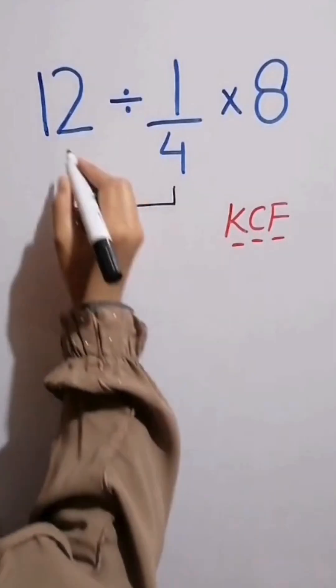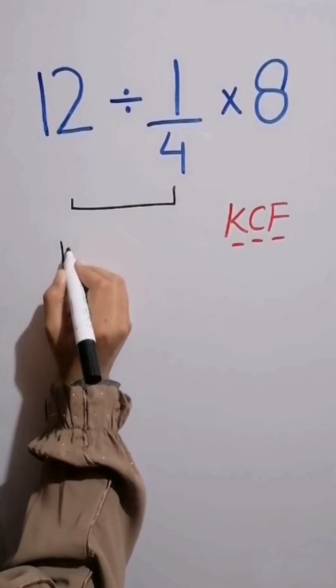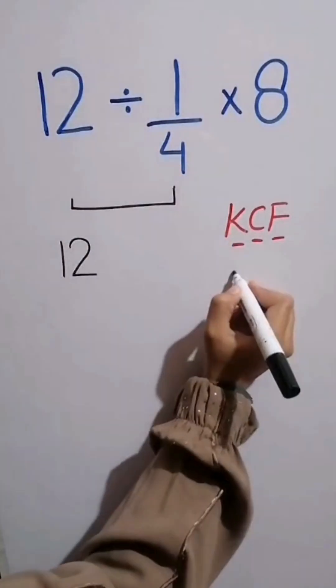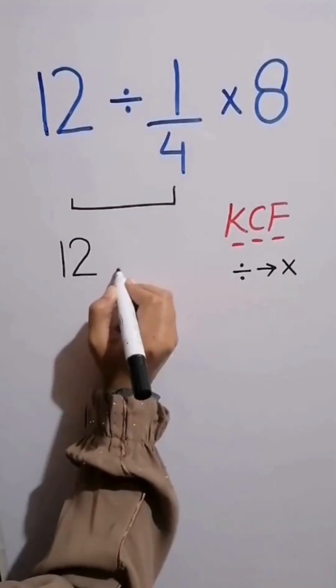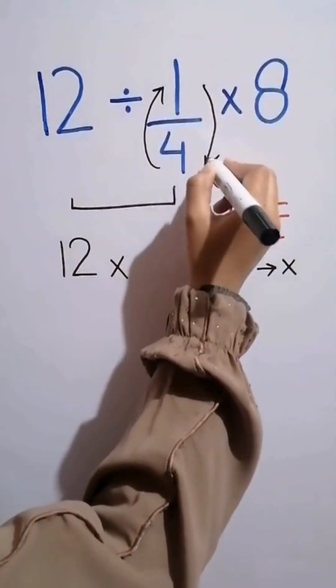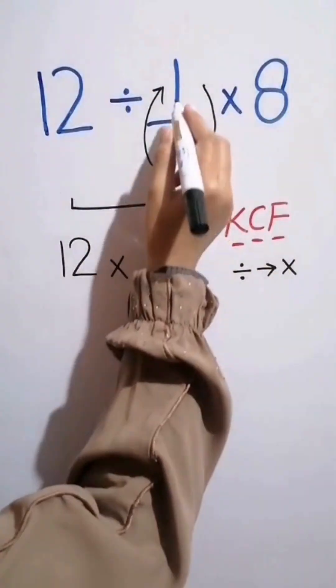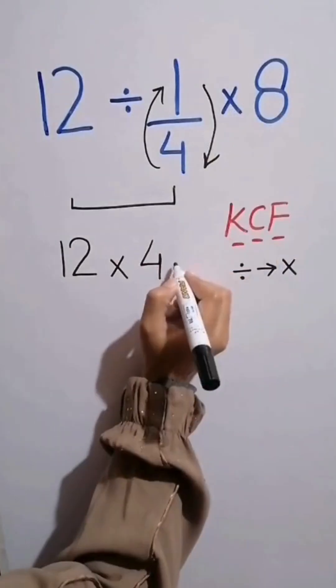Now according to KCF rule, keep the first fraction as it is. Change division into multiplication and flip the second fraction. 1 over 4 becomes 4 then times 8.